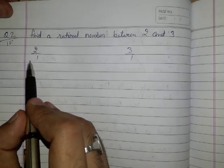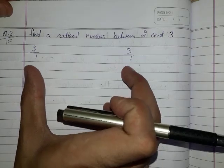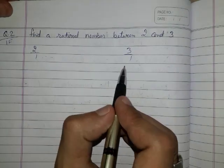So I can write 2 as 2 upon 1 and 3 as 3 upon 1. You can see that both the rational numbers have denominator 1, so both have same denominator.